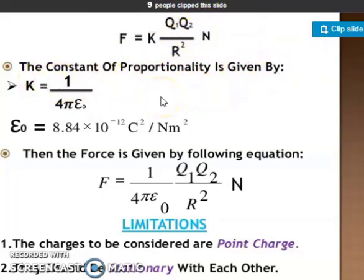Now, the constant of proportionality is given by: K equals 1 divided by 4πε₀. π's value is 3.14, and ε₀ is epsilon naught. Epsilon naught is the permittivity of free space or air, which is 8.84 × 10⁻¹² C²/Nm². Then the force is given by the following equation: F = (1/4πε₀)(Q1Q2/R²) N.